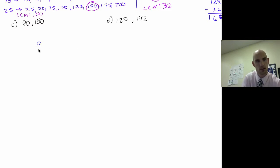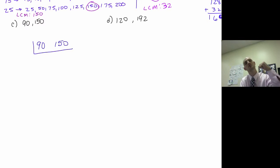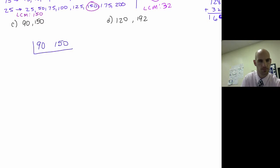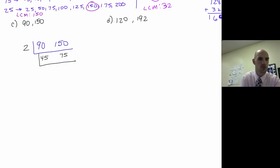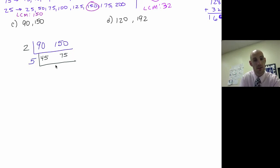Let's take 90 and 150 and write them side by side. What I'm going to do is divide each of them by the same number to make them smaller. I know both are even, so I divide by 2 — that gives me 45 and 75. Something else common: they both have a factor of 5. Divide by 5 — I get 9 and 15.